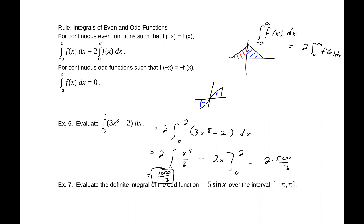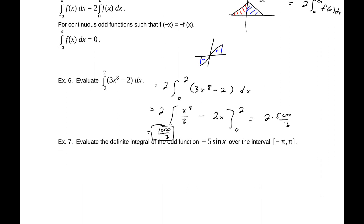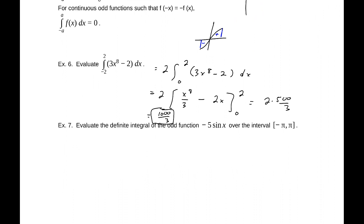Which makes our integral equal to 1000 over 3. Again, even function sort of simplifies our work just a bit. Evaluate the definite integral of the odd function negative 5 sine x over the interval negative pi to pi. We are told this is an odd function. We are actually given that fact, but that's a fundamental truth when it comes to trigonometric functions. The sine functions are odd and cosine functions are even.